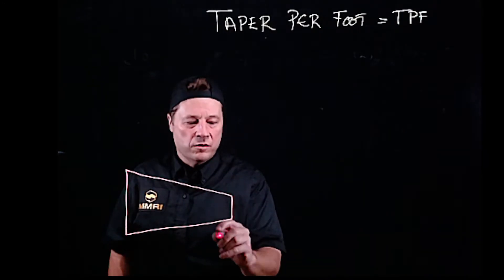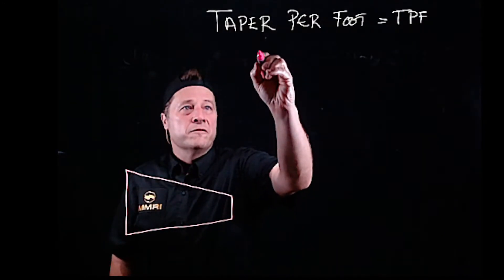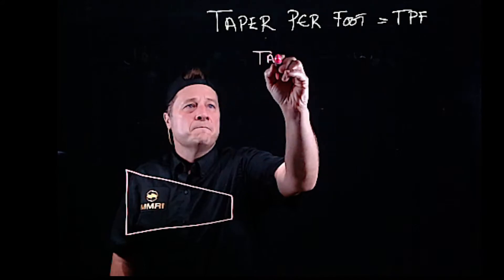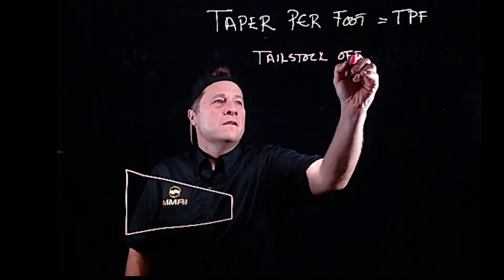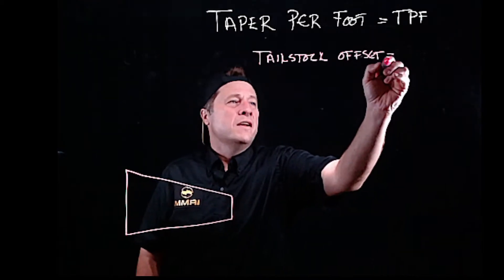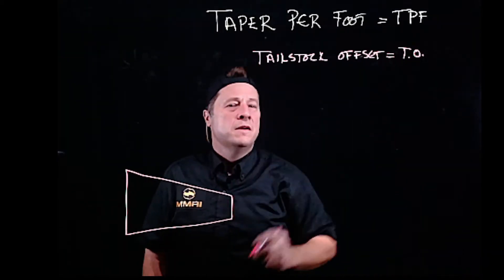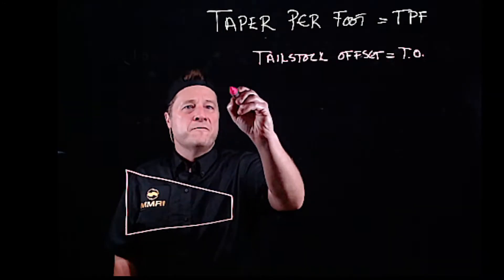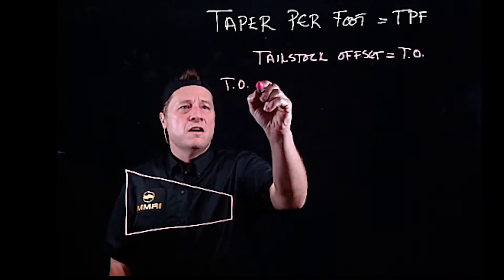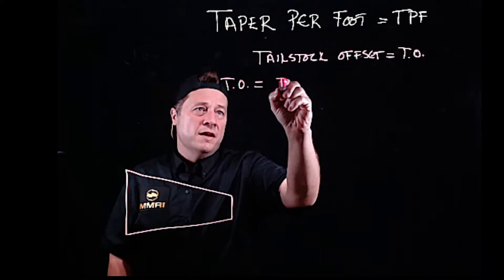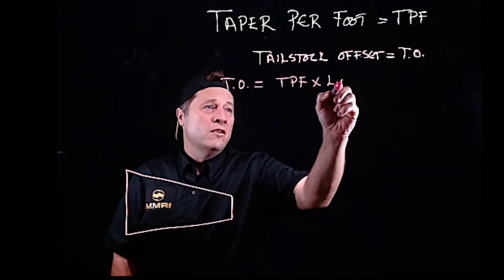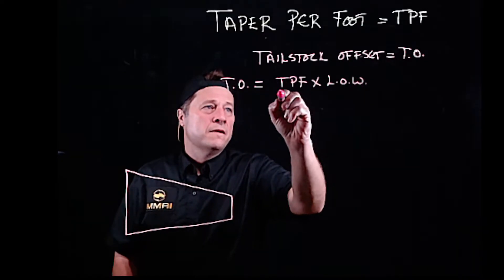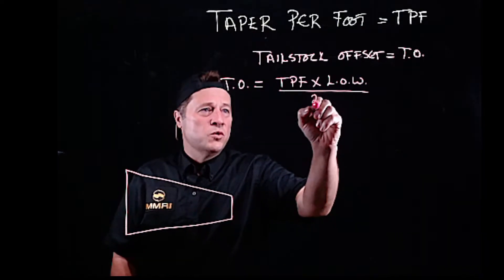We need to know a couple of things. Let's write out the formula first. Tailstock offset, hereby known as T.O., equals taper per foot times L.O.W. divided by 24.